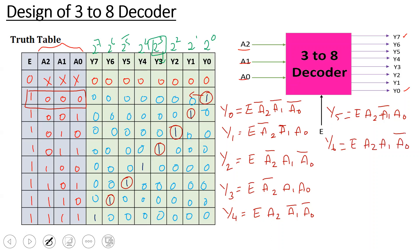For Y6, the combination is E=1, A2=1, A1=1, A0=0. So Y6 = E · A2 · A1 · A0_bar. The last output Y7 has combination E=1, A2=1, A1=1, A0=1. So Y7 = E · A2 · A1 · A0. These are all 8 Boolean expressions. Now we will use these to draw the logic diagram.